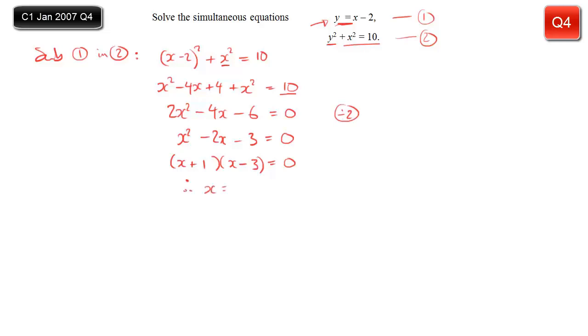So I've factorized. I just need to write down my x values. So they'll be minus 1 and 3. So I'm halfway there. And I simply need to get the y values. And I could substitute back into either of my equations, but it would be foolish to do it into equation 2, when equation 1 is so beautiful and simple. So I'll substitute into equation 1.